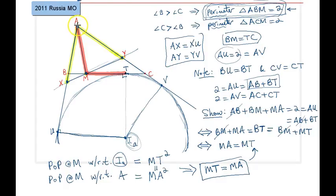So if MT is in fact equal to MA, then the perimeter of triangle ABM would be simply equal to AB plus BM plus MT. But BM plus MT is simply BT, BT is equal to BU. Therefore AB plus BU, which is simply AU, is equal to 2, and we're done.